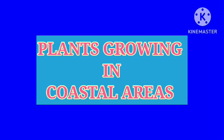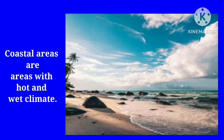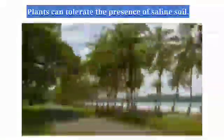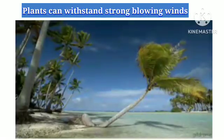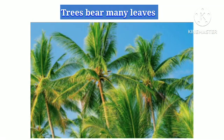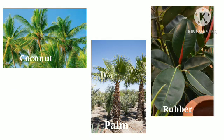Coastal areas are areas with hot and wet climate. The soil in coastal areas is sandy and saline, and these places are generally windy. Trees growing in these areas show the following adaptations: the plants can tolerate the presence of saline soil; they can withstand strong blowing wind because of their flexible trunk; they bear many leaves and do not shed them throughout the year; and the fruits and seeds of trees get easily dispersed by sea. Coconut, palm, and rubber trees grow well in coastal areas.